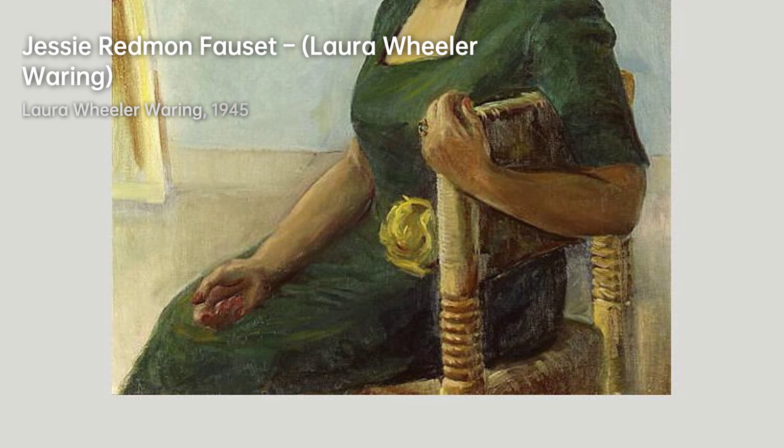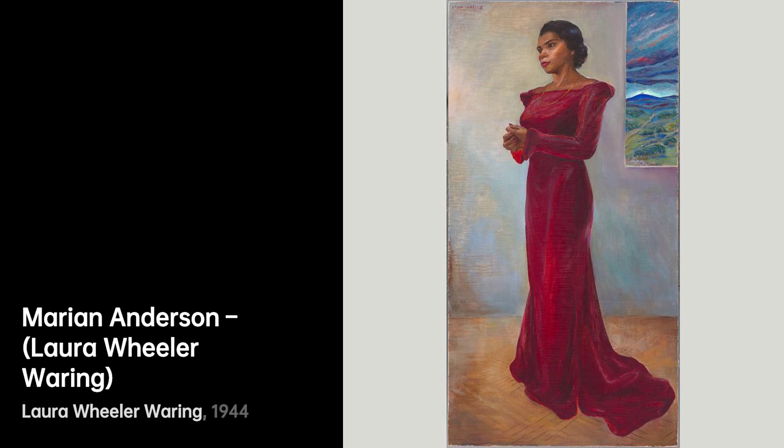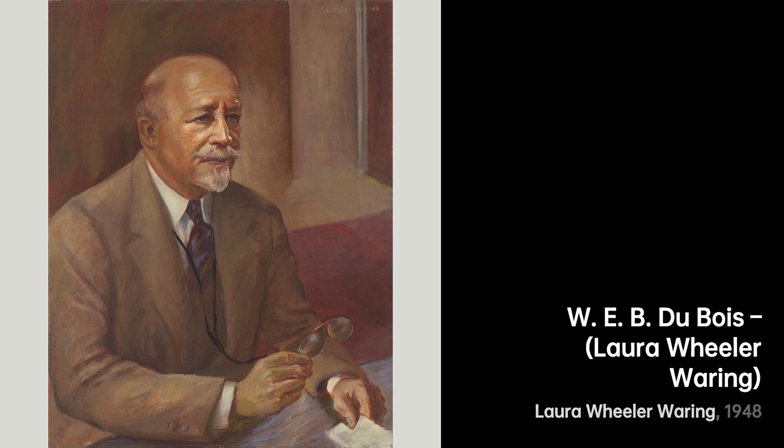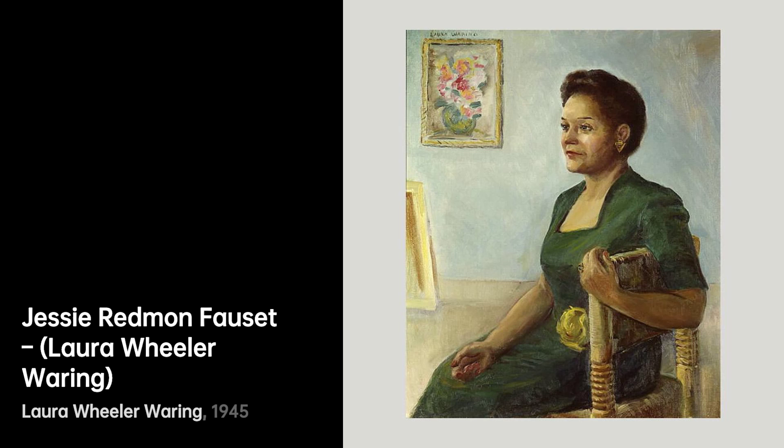Laura Wheeler Waring was born on May 16, 1887, in Hartford, Connecticut. She came from an educated family with a strong background in education and anti-slavery activism. Her father was a pastor, and her mother had been active in anti-slavery activities, including the Underground Railroad.